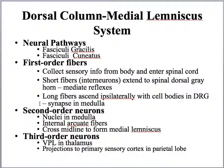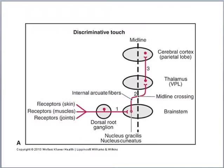Then they're going to cross over to form the medial lemniscus. The medial lemniscus then projects to the third-order neuron, which is the ventral posterior lateral thalamic nucleus, or the VPL, in the thalamus. From there, the VPL projects to the primary sensory cortex in the parietal lobe.